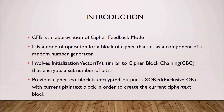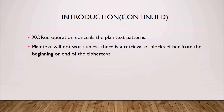Cipher Feedback Mode has an abbreviation of CFB. It is a mode of operation for a block cipher that acts as a component of a random number generator. It involves an initialization vector (IV), similar to Cipher Block Chaining (CBC), that encrypts a set number of bits. When the previous cipher text block is encrypted, the output is XORed with the current plain text block in order to create the current cipher text block. The XOR operation conceals the plain text patterns.